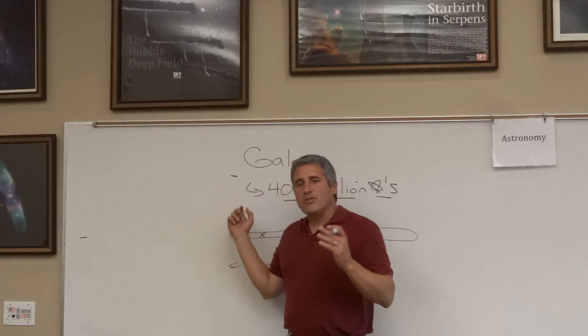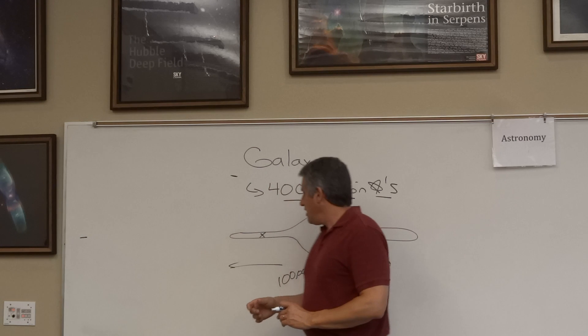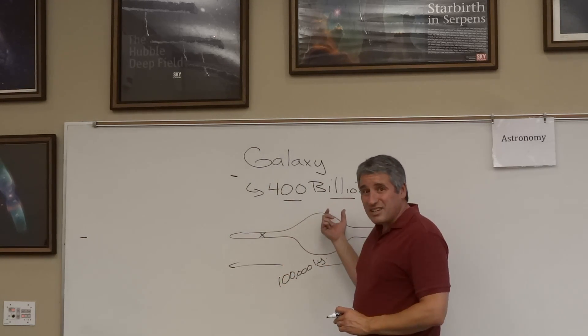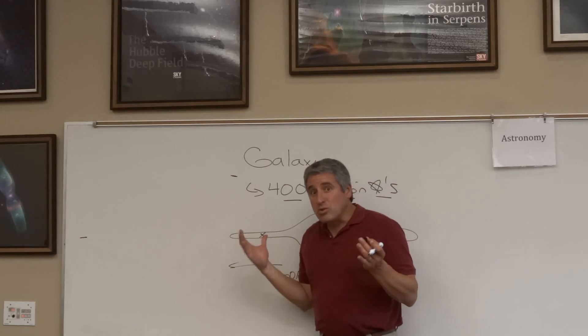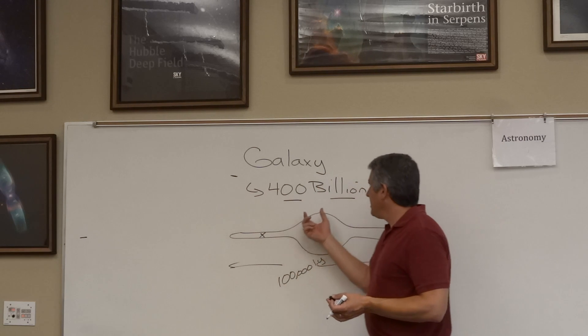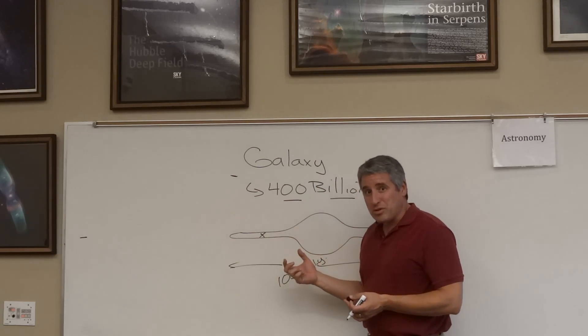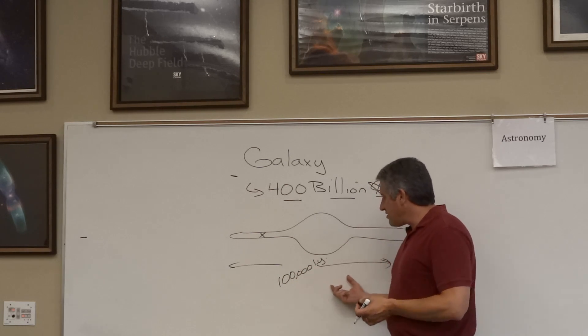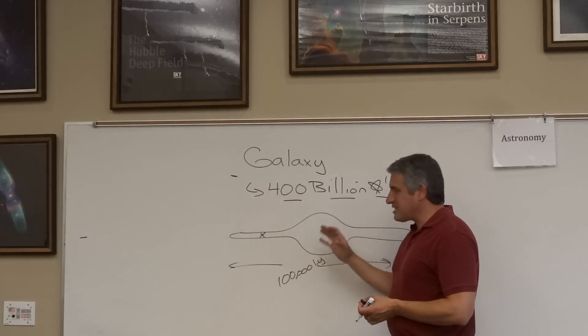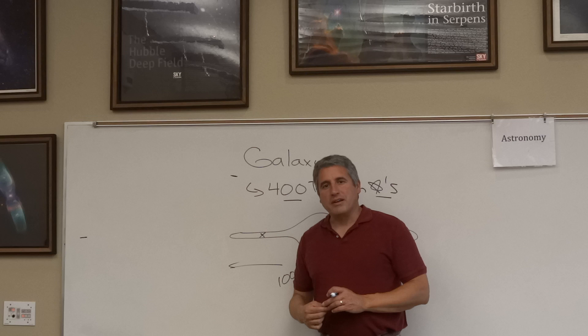So galaxies are like their own little island universes. Billions of stars, each probably having solar systems of planets. Billions, if not trillions of planets, many of them Earth-like. 100,000 light-years across. That's what I mean when I talk about a galaxy.